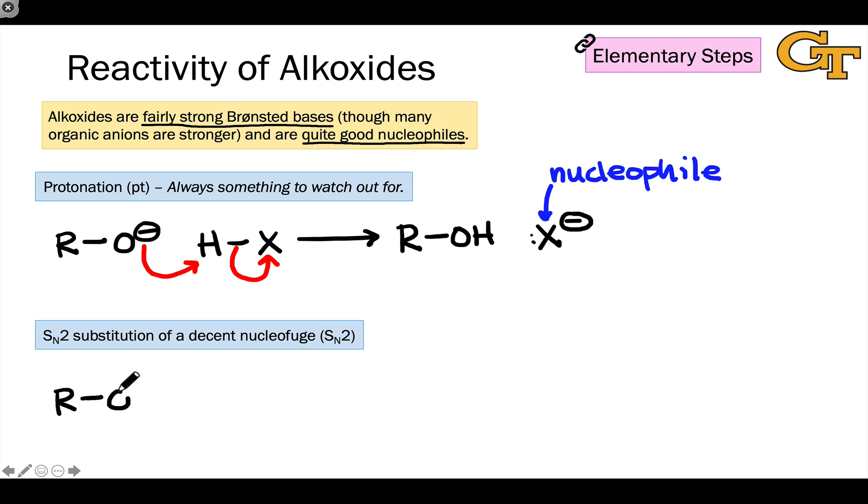Alkoxides are also great at SN2 substitution, provided the electrophile is cooperative. For example, if we take an alkoxide and treat it with ethyl bromide, bromide is a good leaving group. An SN2 elementary step can occur here, and this is an n to σ* elementary step, with the non-bonding lone pair on oxygen overlapping with the σ* carbon-bromine orbital.